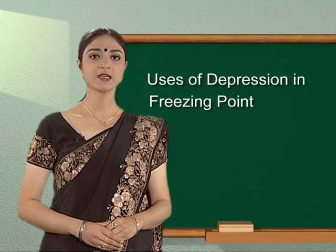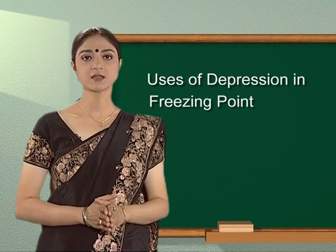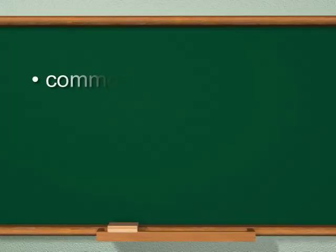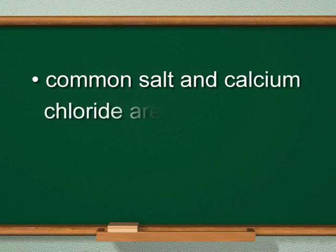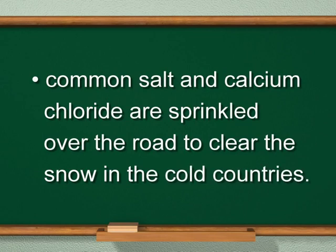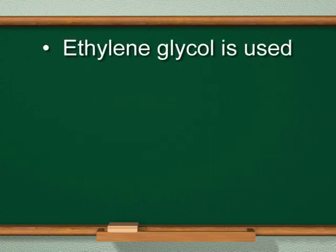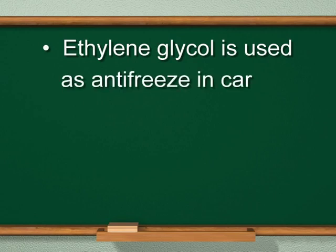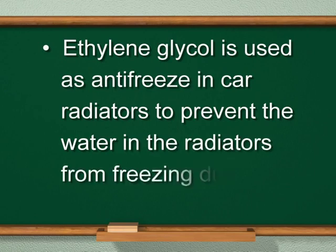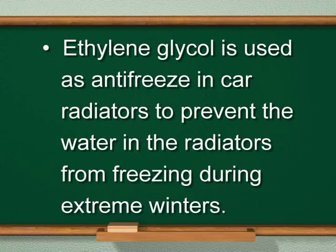Uses of depression in freezing point: Common salt and calcium chloride are sprinkled over roads to clear snow in cold countries. Ethylene glycol is used as antifreeze in car radiators to prevent the water in the radiators from freezing during extreme winters.